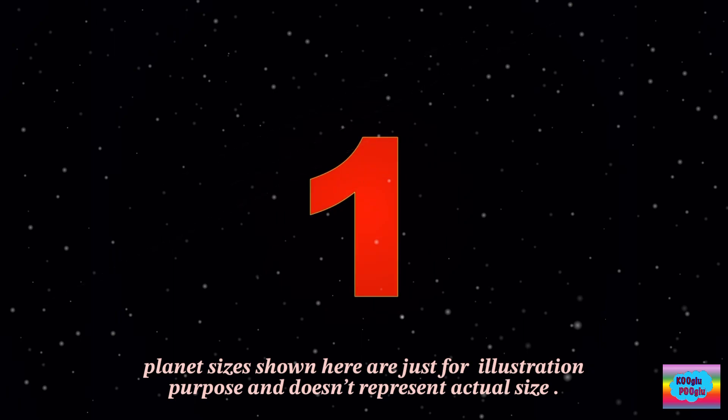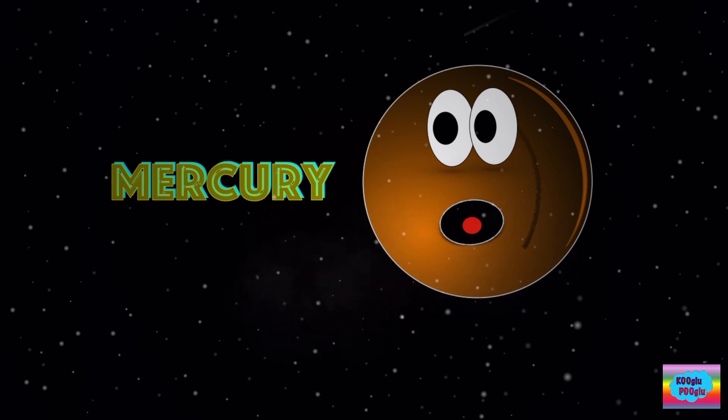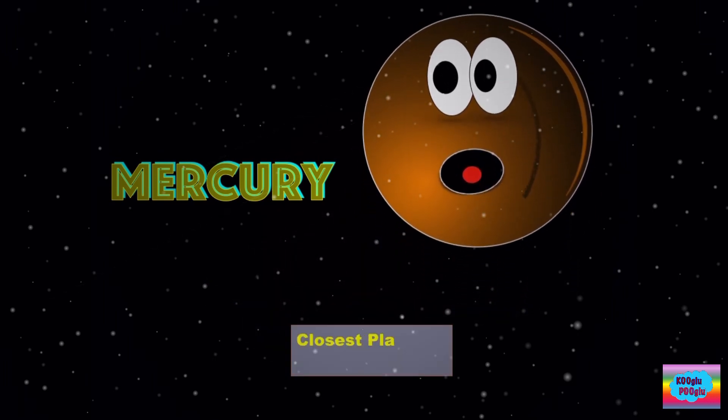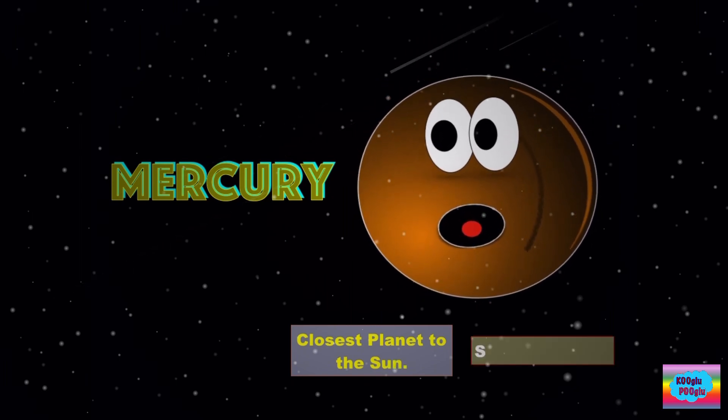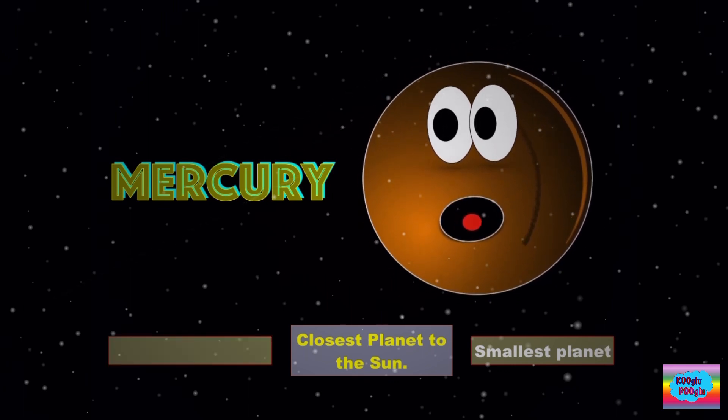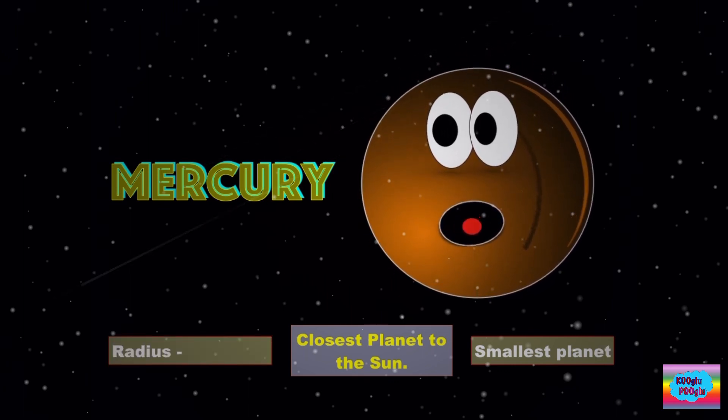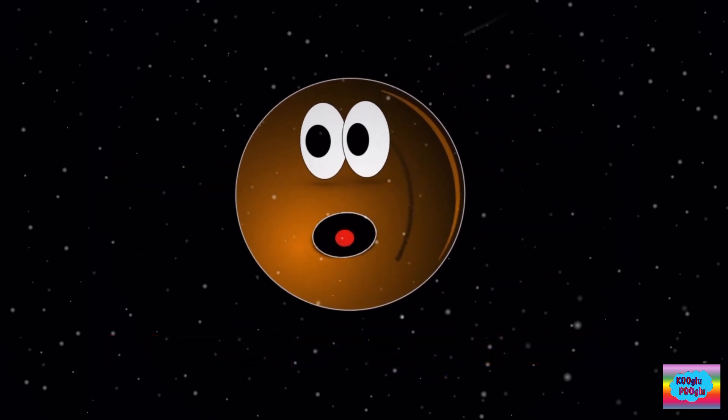Number one, Mercury. Hello! My name's Mercury. Mercury's the closest planet to the sun, and it's the smallest planet in our solar system. And its radius is 2,440 kilometers.